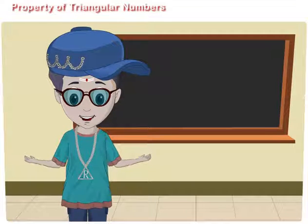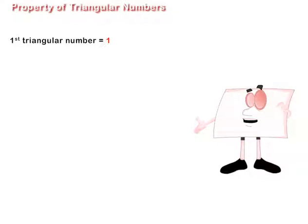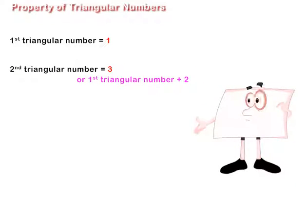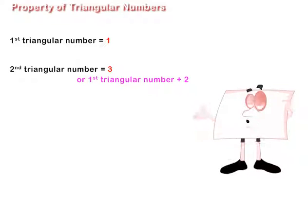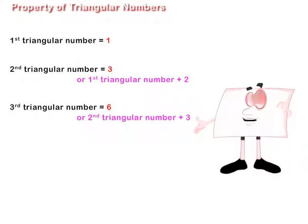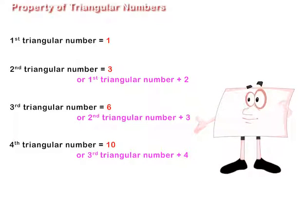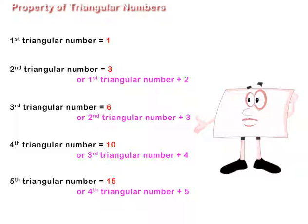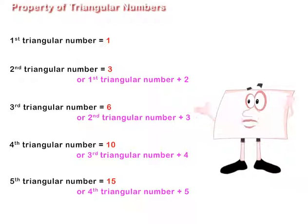An important property of triangular numbers: the first triangular number is 1, the second triangular number is 3 or first plus 2, the third is 6 or second plus 3, the fourth is 10 or third plus 4, and the fifth triangular number is 15 or fourth plus 5.